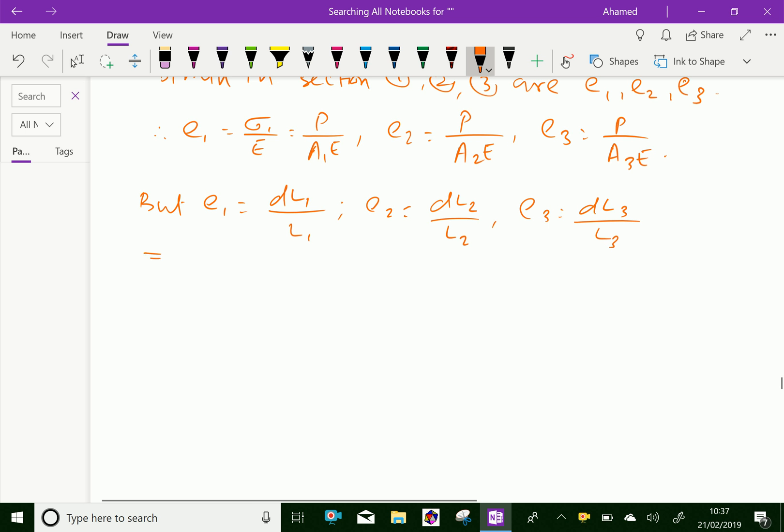From that we can get delta L1 equals E1 L1, which is equal to P L1 over A1E. Similarly, delta L2 equals P L2 over A2E, and delta L3 equals P L3 over A3E.